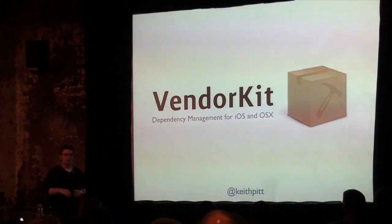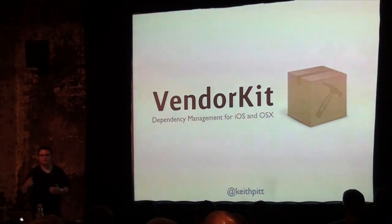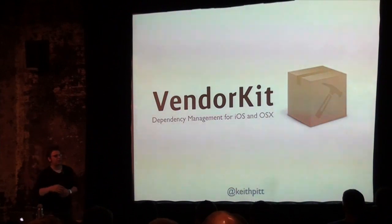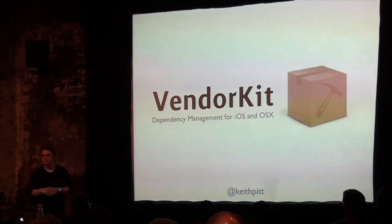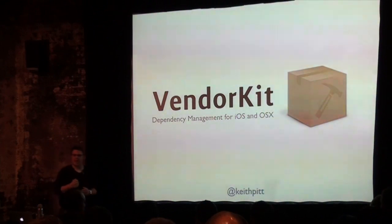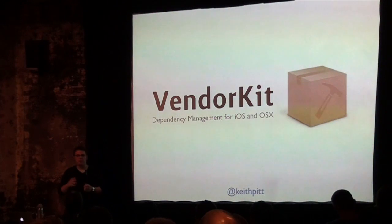So let me set you up with a scenario. You get to work and you're tasked with setting up a new app for the day. This app does some sort of network communication. So you're thinking, I'm going to need to use a network library. Because I'm lazy, I want to use ASI HTTP request. And the data we're getting down is in JSON format, so we need some sort of JSON library.